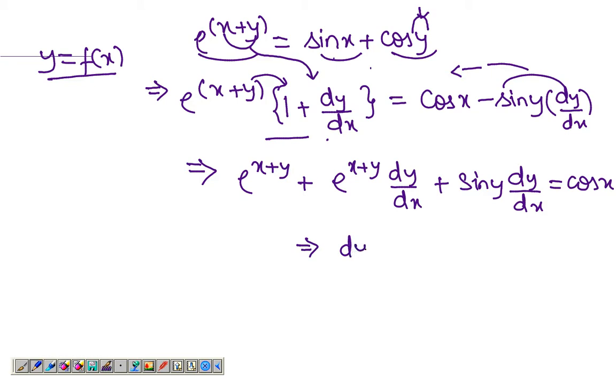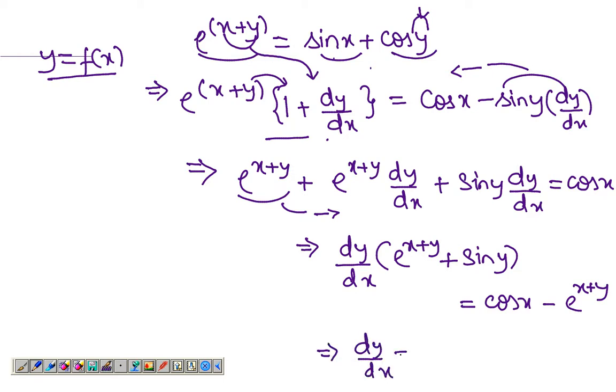So let me just take out dy/dx common. So I get (e^(x+y) + sin(y)) dy/dx = cos(x). And just bringing this term to the right will give me negative e^(x+y). So you got dy/dx, which is what you wanted. dy/dx = (cos(x) - e^(x+y))/(e^(x+y) + sin(y)).